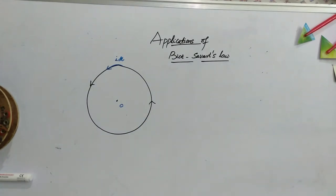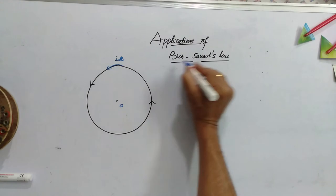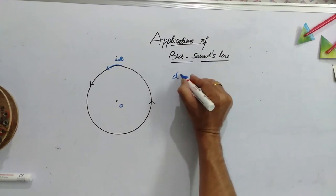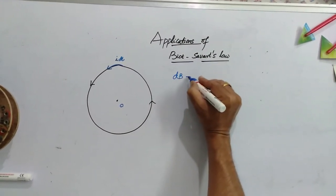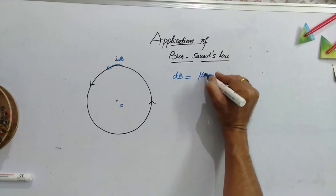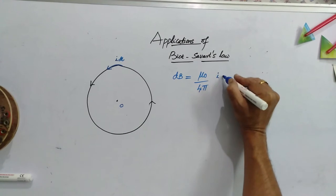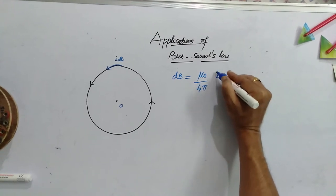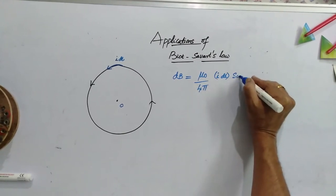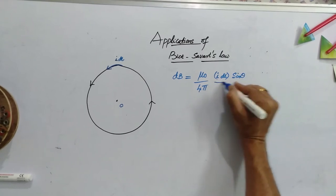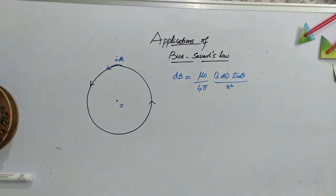Now this current element is always tangential to the circular coil. And according to Biot and Savart's law, Db is equal to mu 0 by 4 pi ideal sin theta by r square.